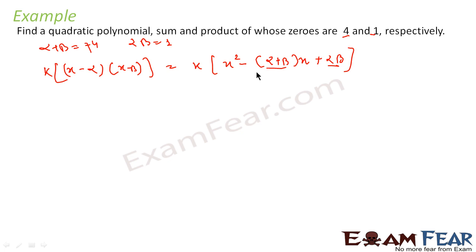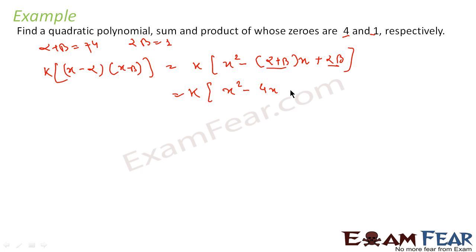We know that the general form of the quadratic polynomial is k(x − α)(x − β), which we can also write as k(x² − (α + β)x + αβ). This is the general formula. We will now substitute the known values of α + β and α·β.